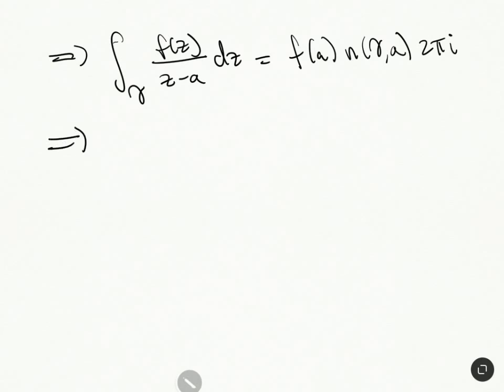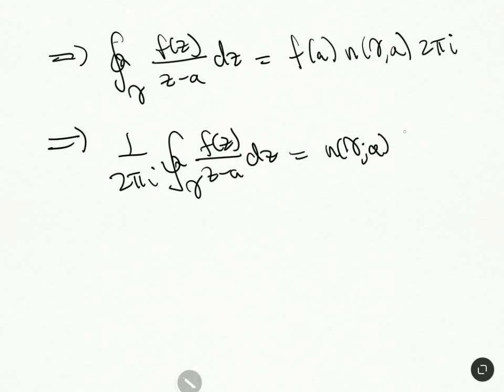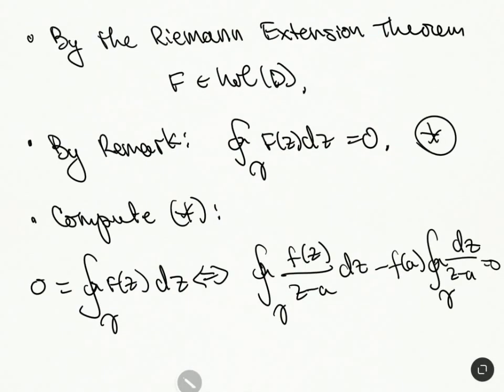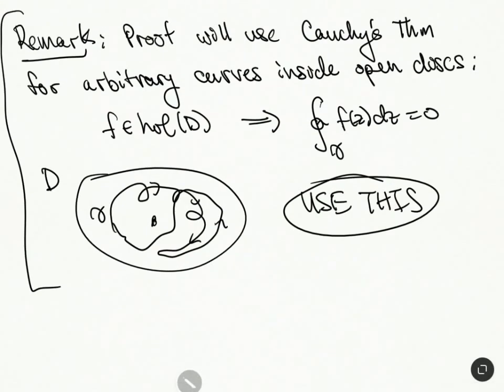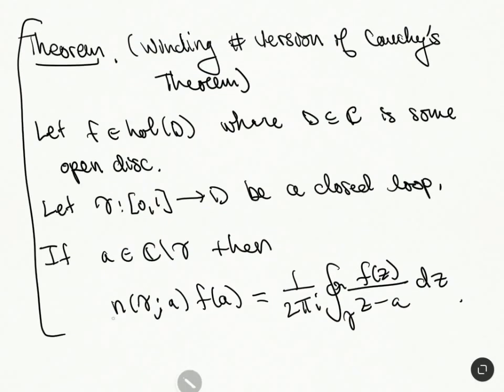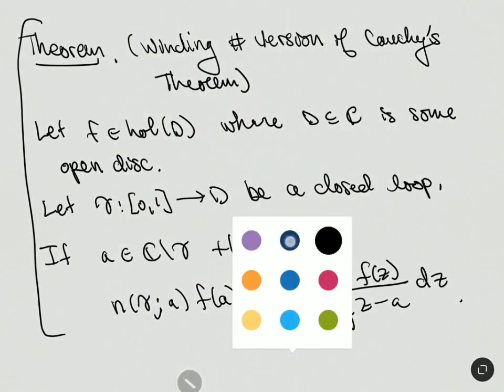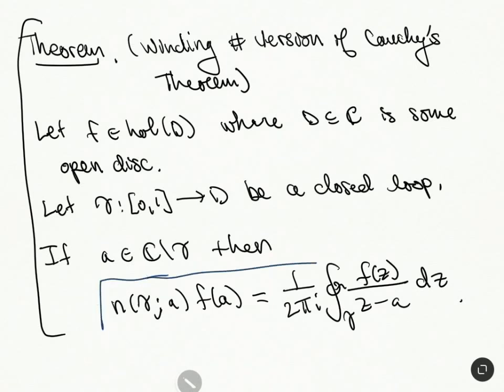And this allows us to conclude that 1 over 2 pi i. So this is again, these are closed contours. So we do that little symbol here. So sometimes I'm doing a semicolon, sometimes I'm not. But this is the formula that we get. So we've established this formula here.